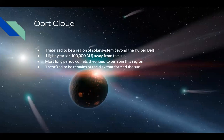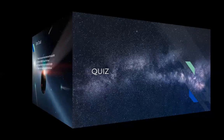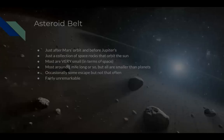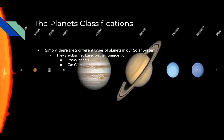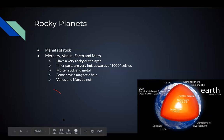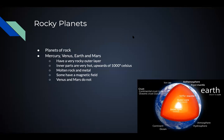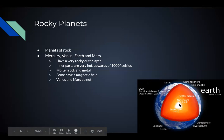The Oort cloud is theoretically supposed to be the remains of the disk that formed the sun. To recap: we have two different types of planets in the solar system — rocky planets, which are made of rock, and the inner parts are molten rock and molten metal that can reach temperatures of upwards of 1,000 degrees Celsius. Some possess a magnetic field.